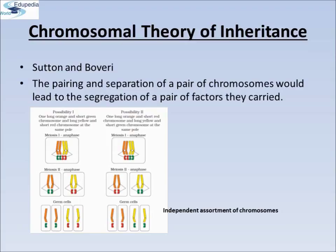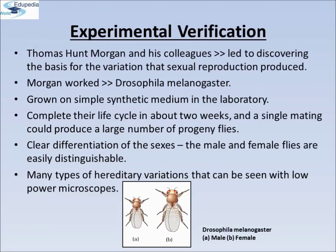Here you can see the independent assortment of chromosomes into gametes, with two possibilities given. The first possibility: one long orange and short green chromosome and one long yellow and short chromosome are at the same pod. During meiosis I they segregate, and in meiosis II they separate toward the germ cells, each germ cell carrying one long orange and one small green, or one long yellow and one small red. The second possibility: one long orange and short red chromosome, and one long yellow and short green chromosome. In the germ cells the first two have the orange and red combination, and the second two germ cells have the yellow and green combination.